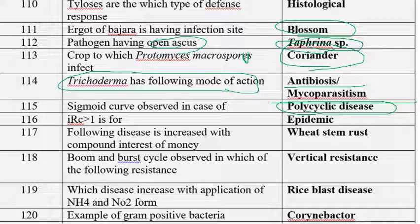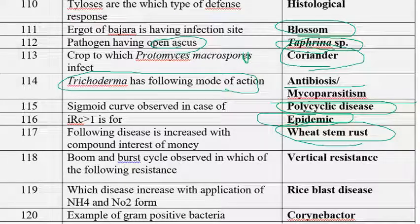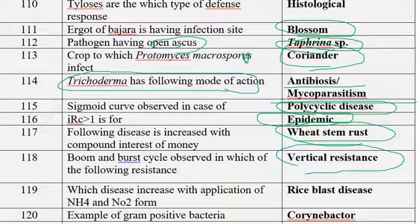Sigmoid curve is observed in polycyclic diseases; monocyclic diseases show a saturation curve; polycyclic diseases show a sigmoid or S-shaped curve; polyetic diseases show a bimodal curve. IRC greater than one represents an epidemic. Disease that increases with the compound interest of money is wheat stem rust. Boom and burst cycle is observed in vertical resistance only; in horizontal resistance, boom and burst cycle is absent.